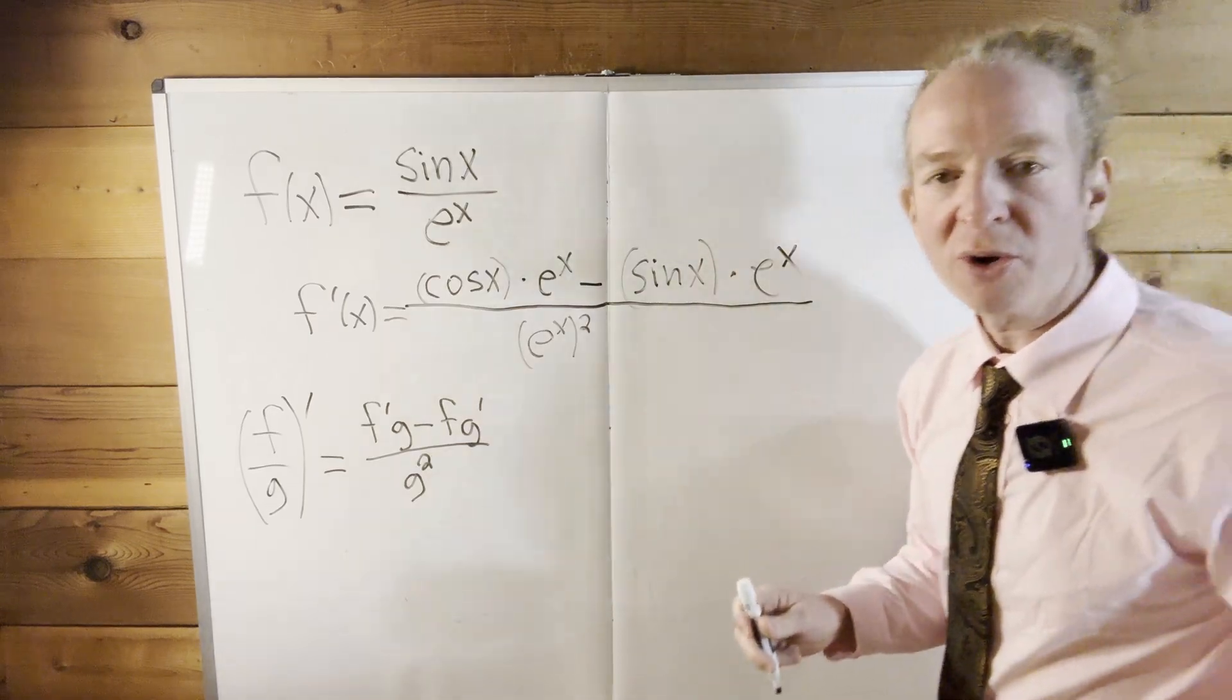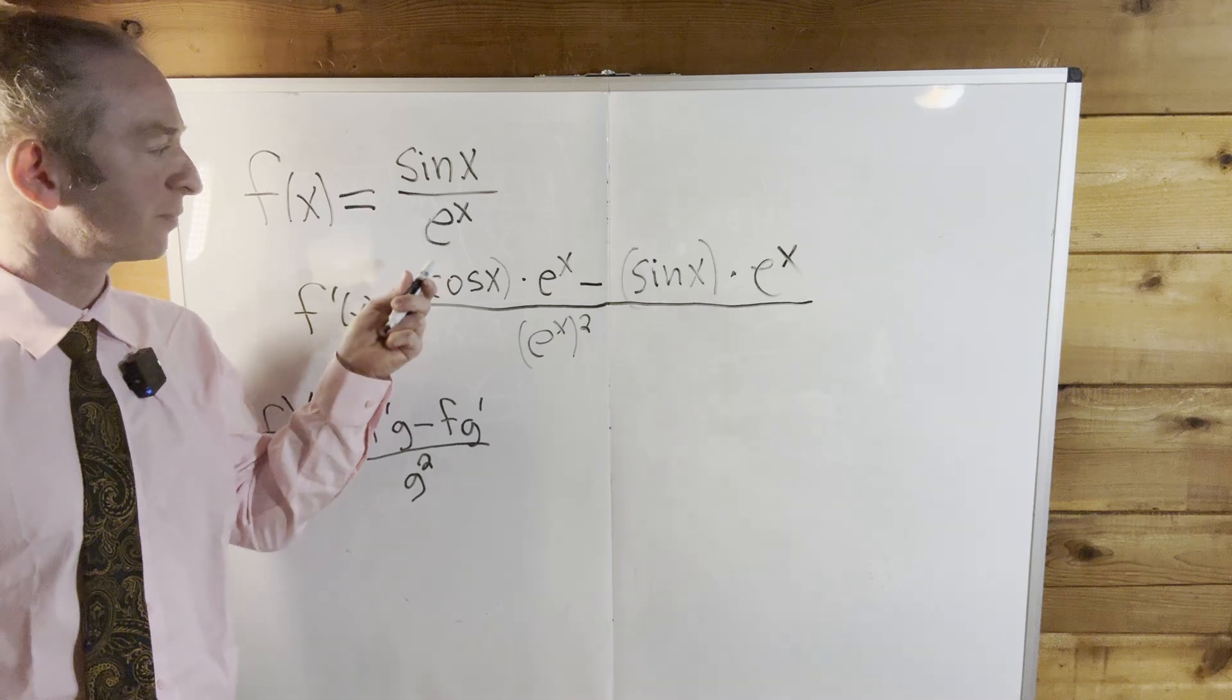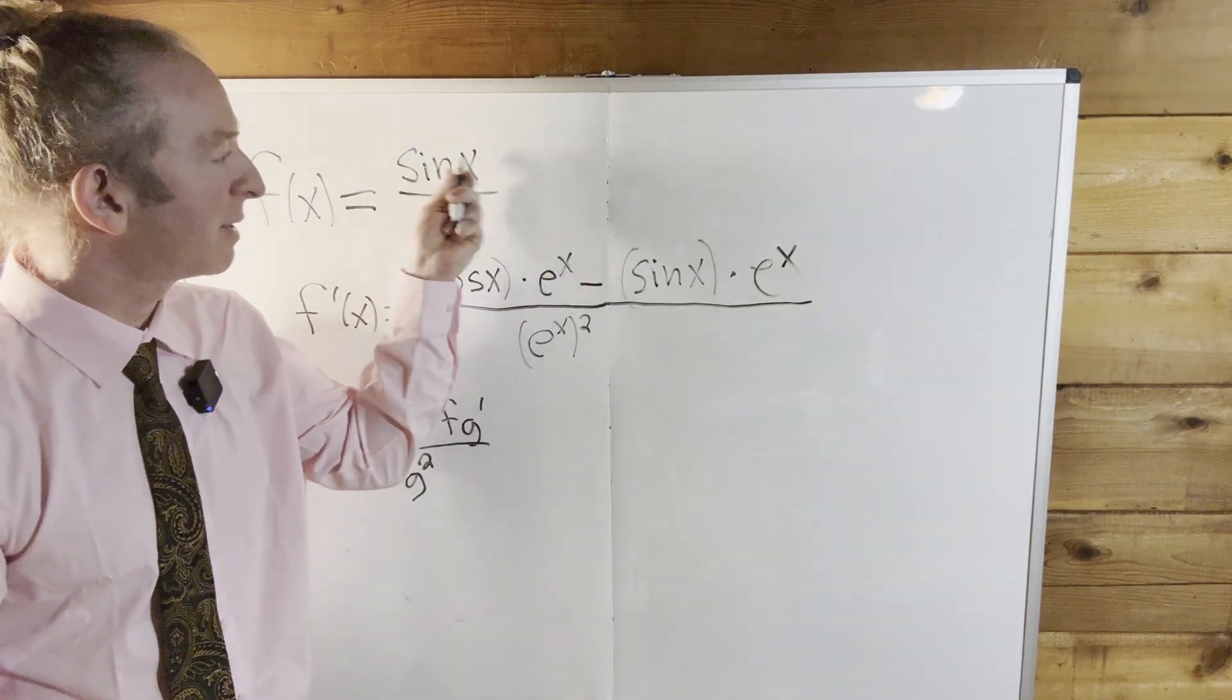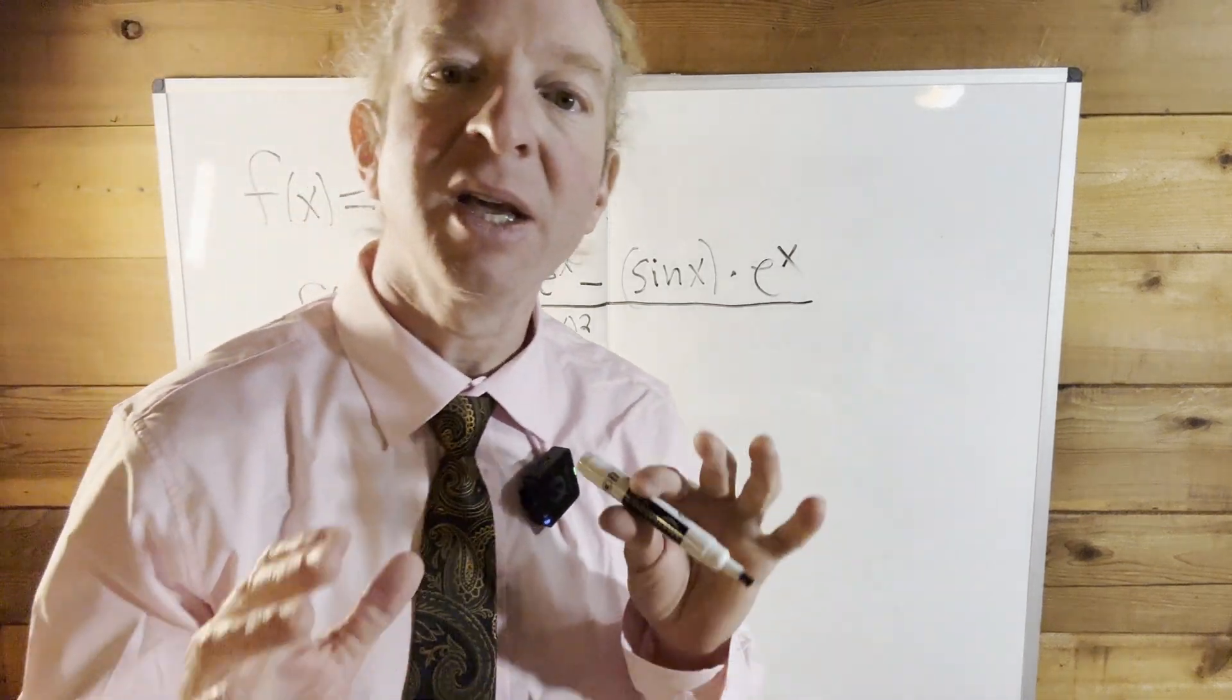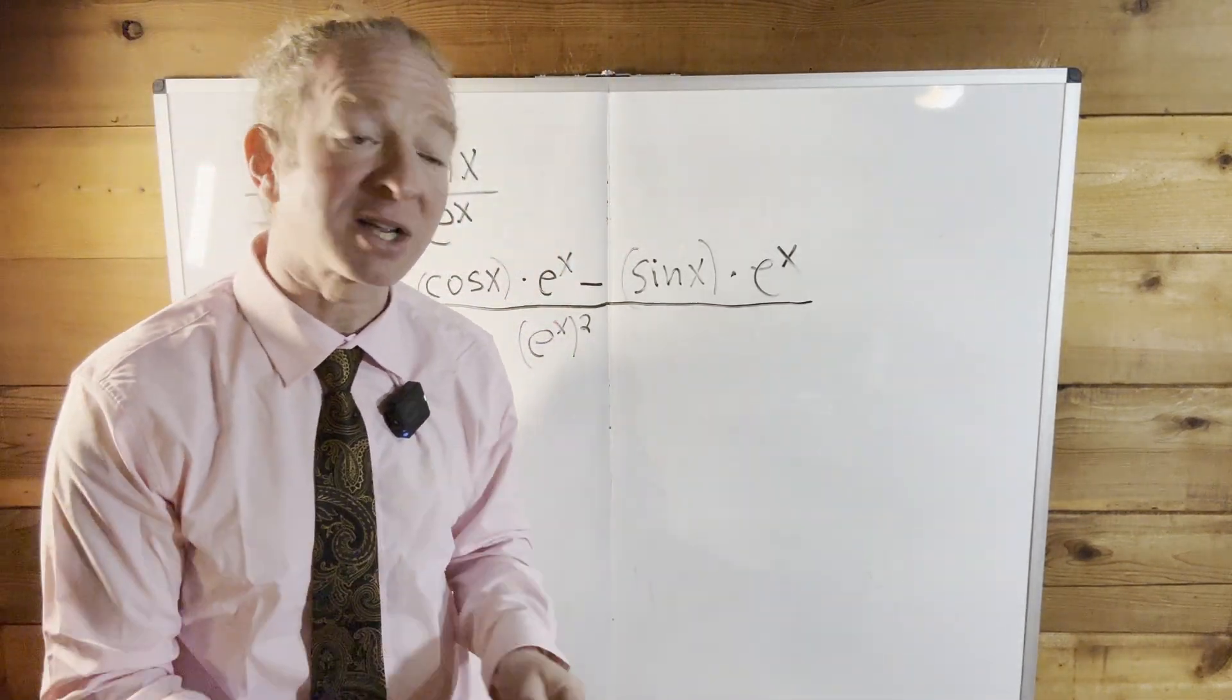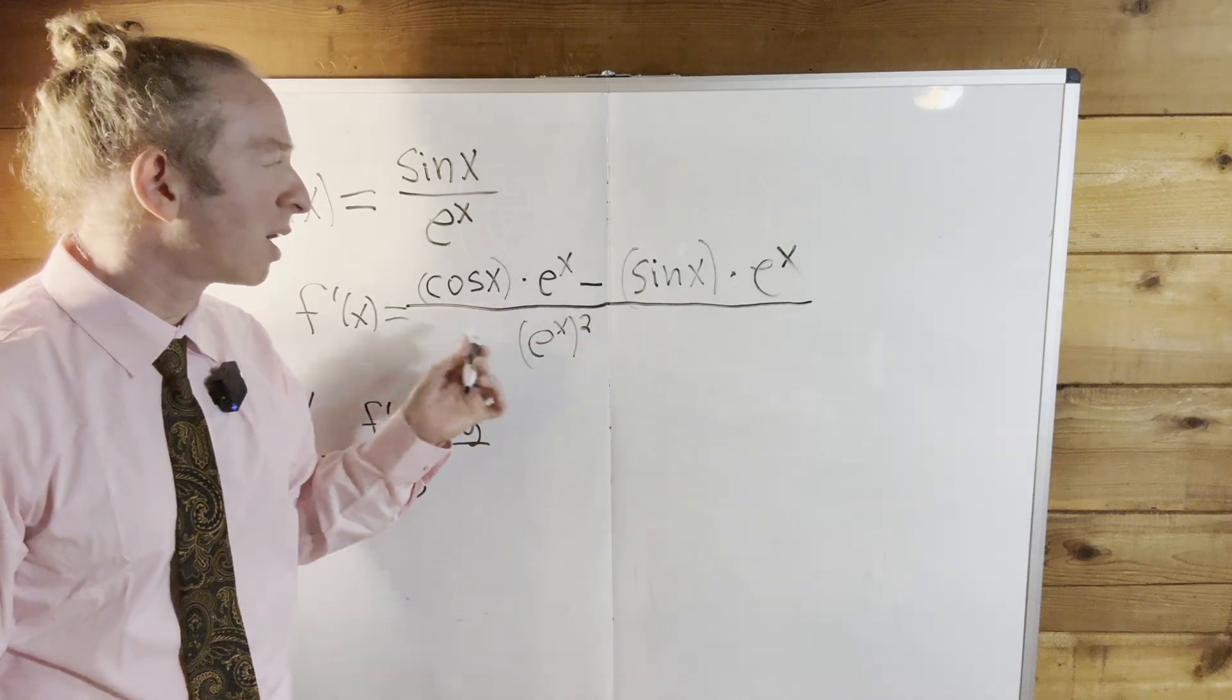So let's just double check our work to make sure that we did it correctly. So it's the derivative of the top, which is cosine times the bottom minus the top times the derivative of the bottom, and the derivative of e to the x is simply e to the x. And it's all over the bottom one squared. So e to the x quantity squared.